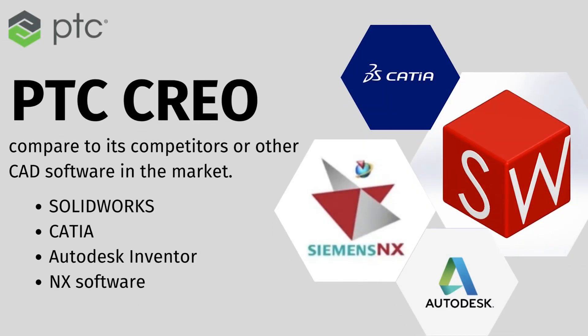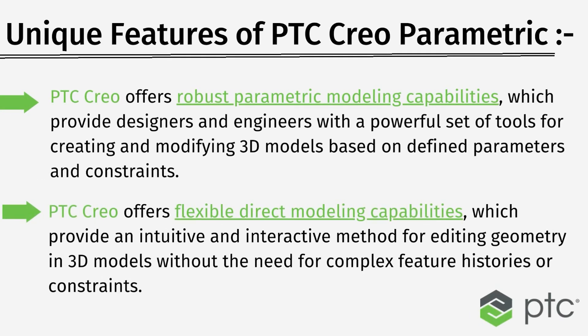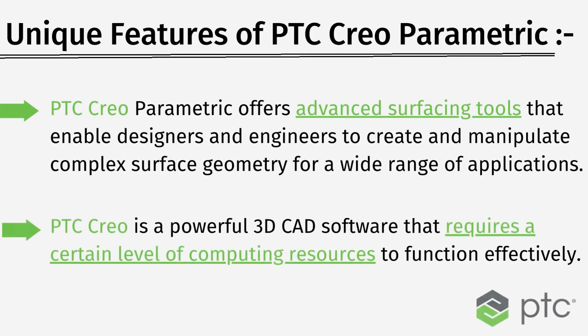Now let's talk about how PTC Creo compares with other CAD software. It competes with major tools such as SolidWorks, CATIA, Autodesk Inventor, and Siemens NX. Unique features of PTC Creo Parametric include robust parametric modeling capabilities, flexible direct modeling, and advanced surfacing tools. One additional standout quality is its efficiency — PTC Creo Parametric can run flawlessly even with a minimal amount of system resources.